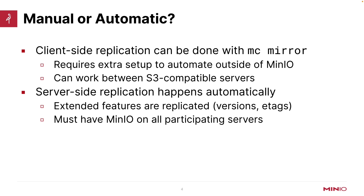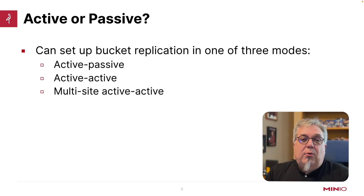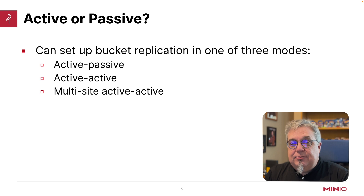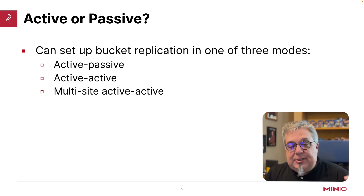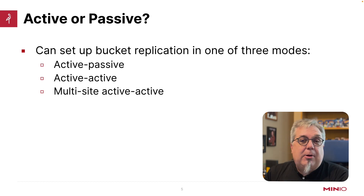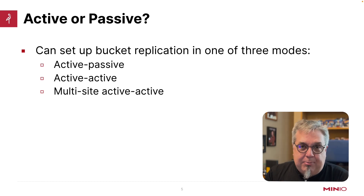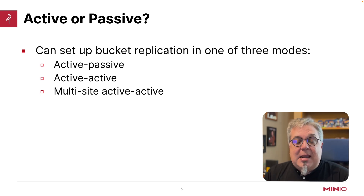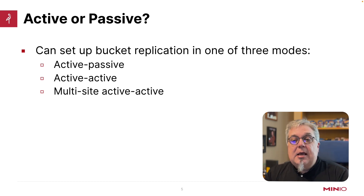Now, in order to do server-side replication, you have to have min.io on all your participating servers. When you're setting up bucket replication, you can have one of three modes. Active-passive, which has a main bucket that then replicates its data down to a secondary bucket. The secondary bucket is passive — you're not going to upload anything to that bucket, and anything that you put in that bucket is not going to get replicated back to the main bucket.